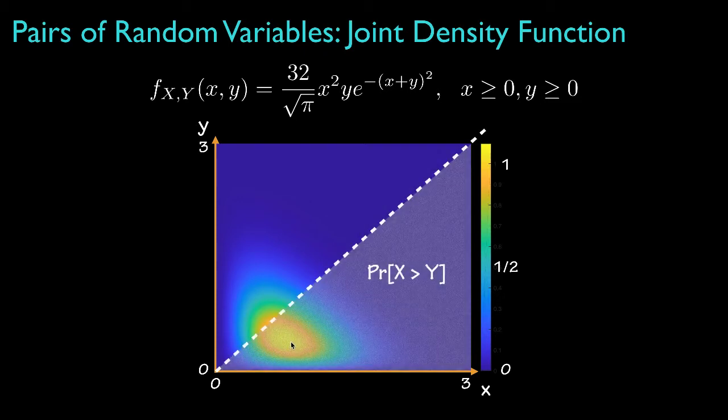Now, suppose we wanted to know, for example, the probability that the random variable X is greater than the random variable Y, which is the shaded region that we've shown here. Now, it should be clear that the probability will be greater than one-half because there appears to be more of the density in that region, but to get the exact value,